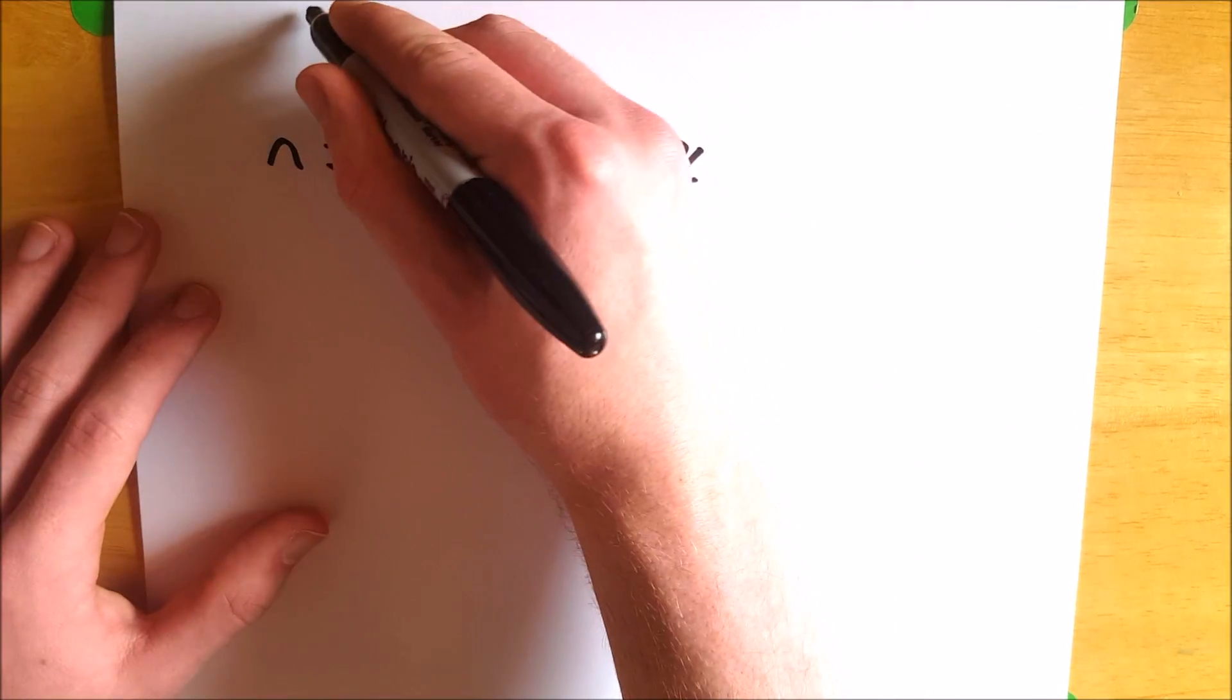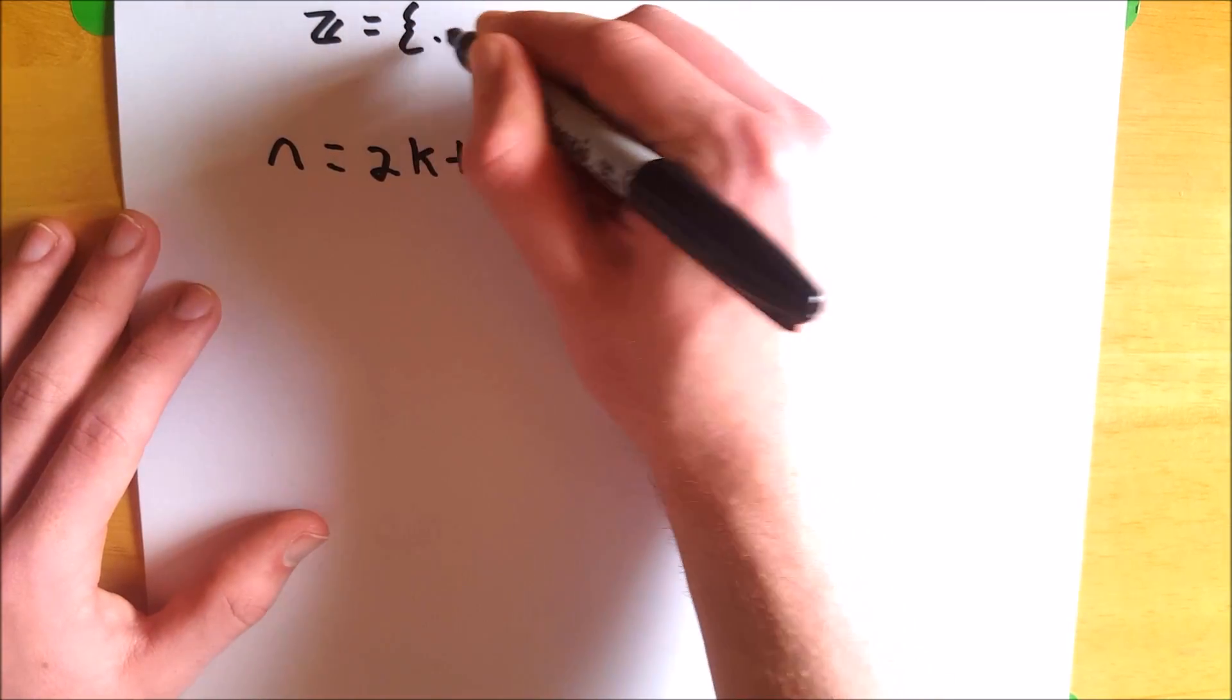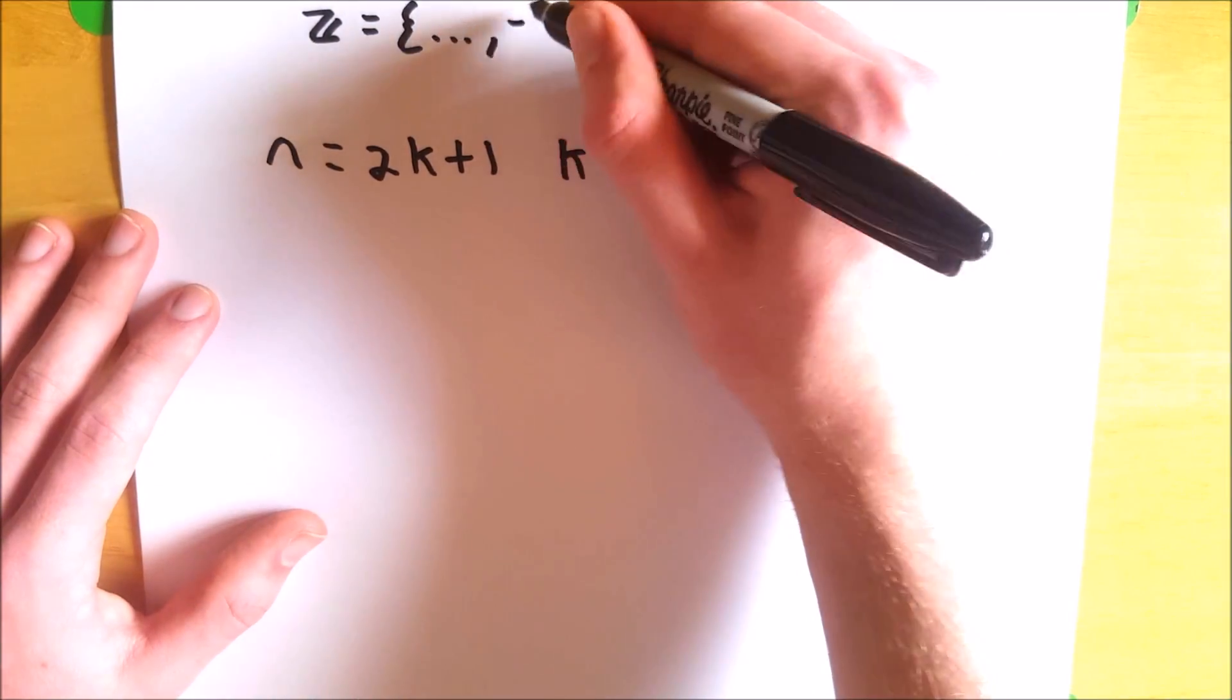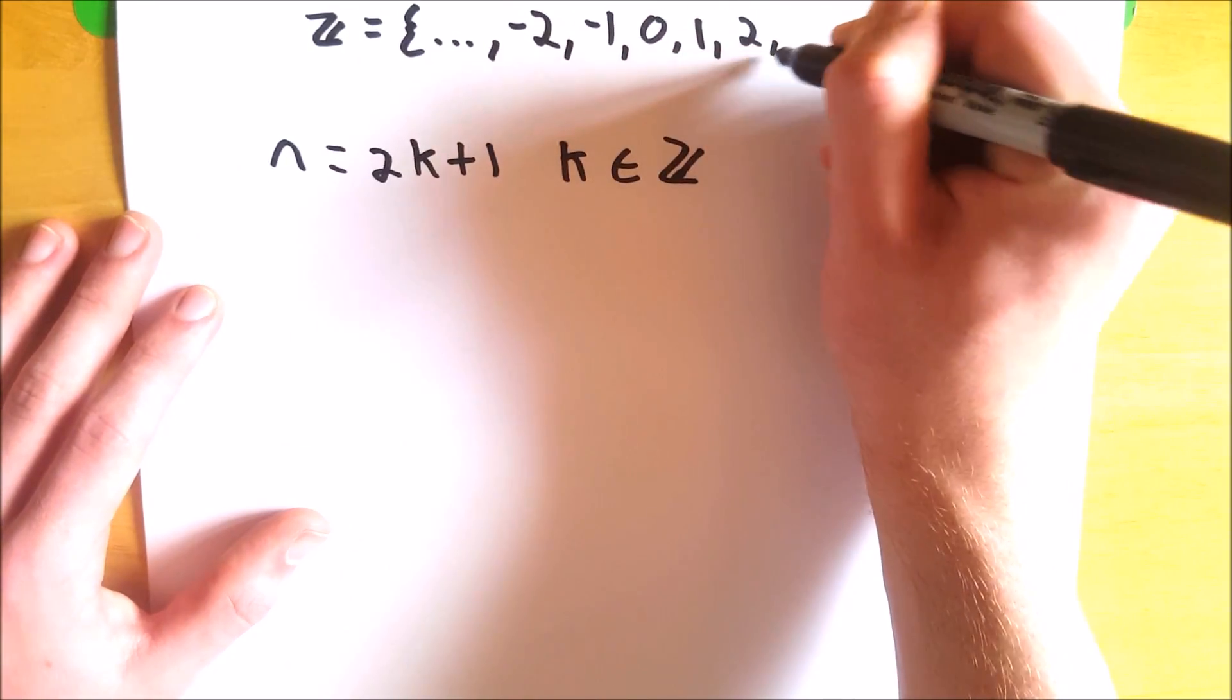So what is Z? If you're unfamiliar, Z is the set of all integers. So that looks something like this. That's Z, the set of all integers.